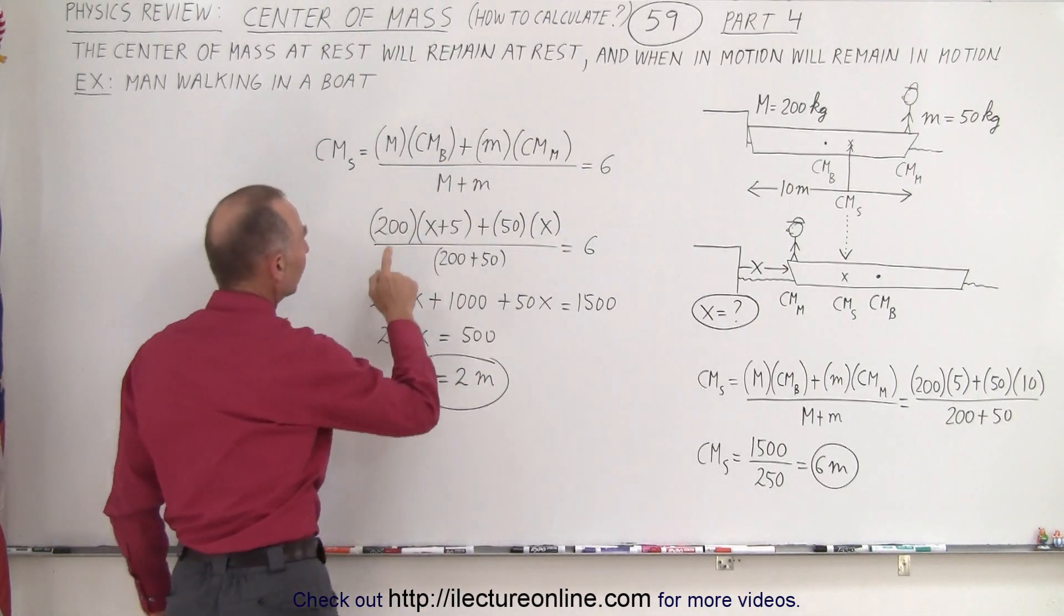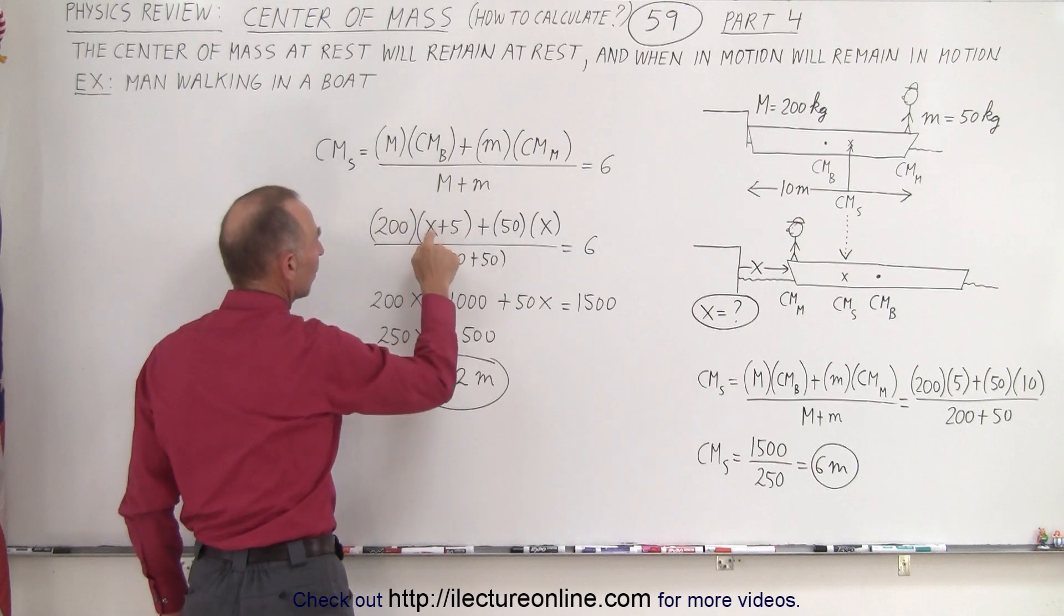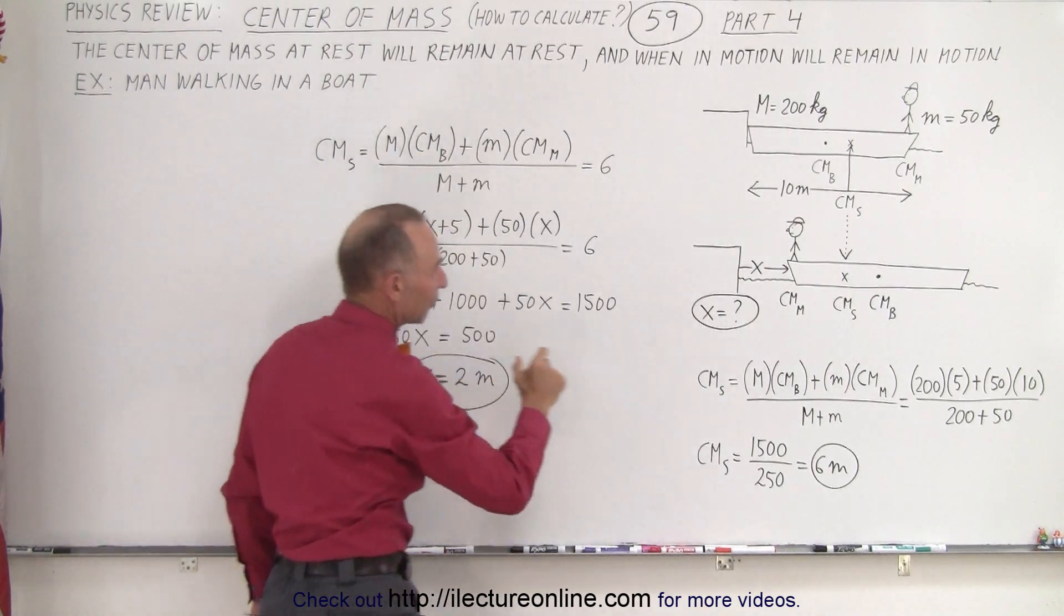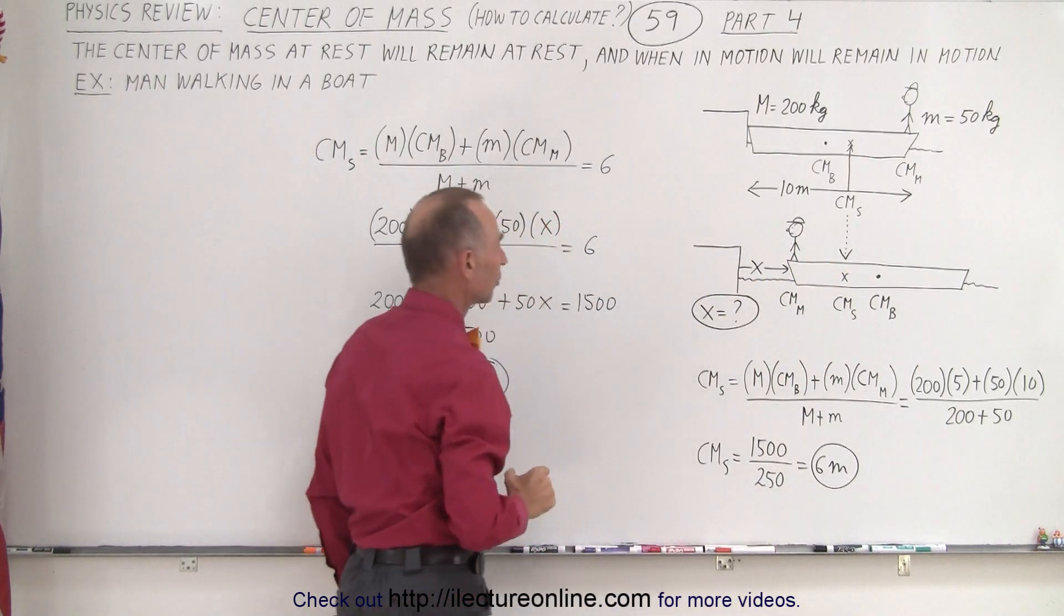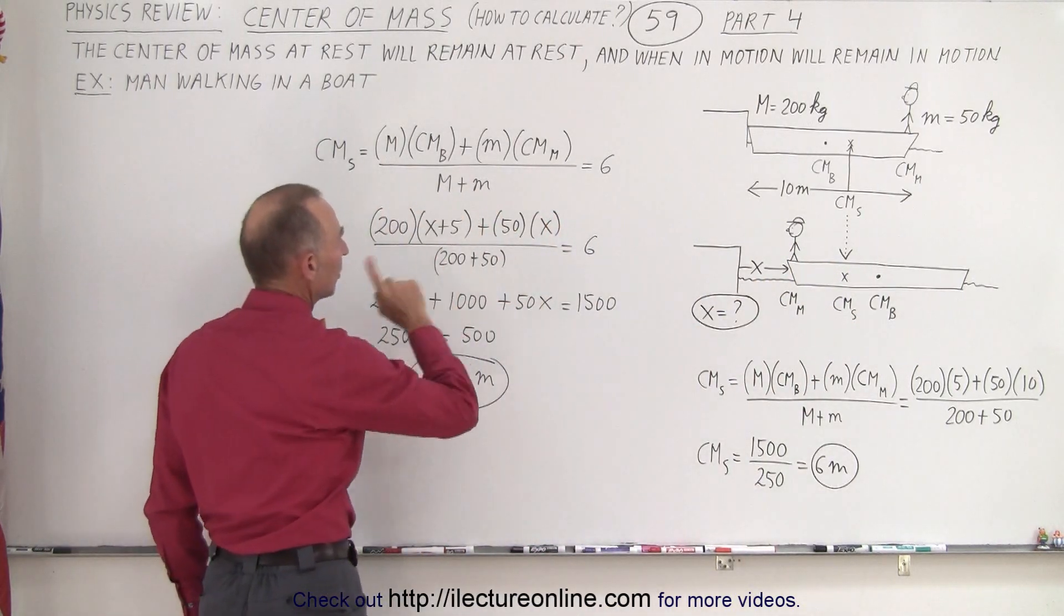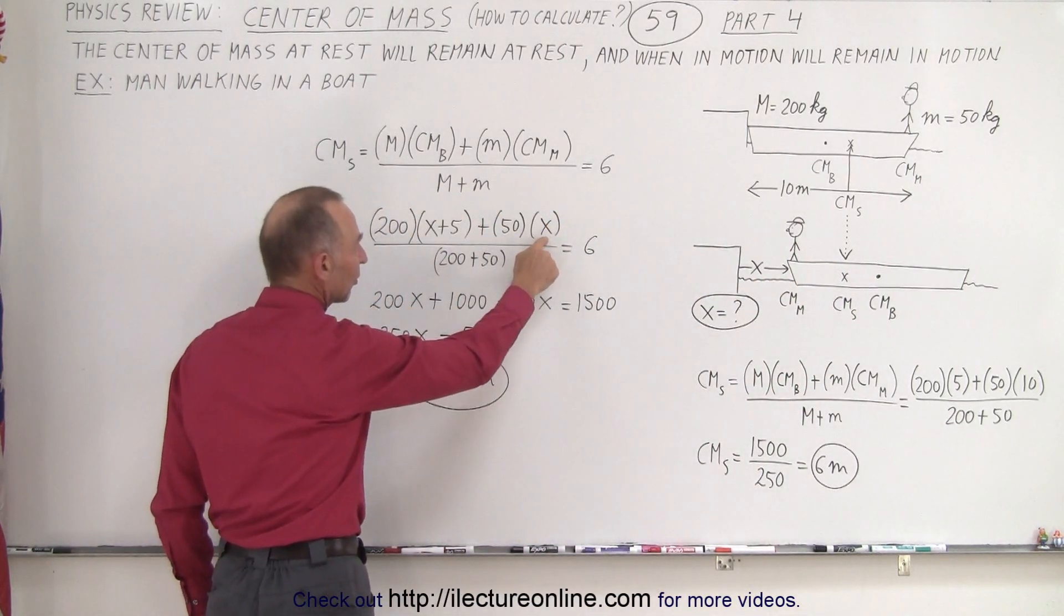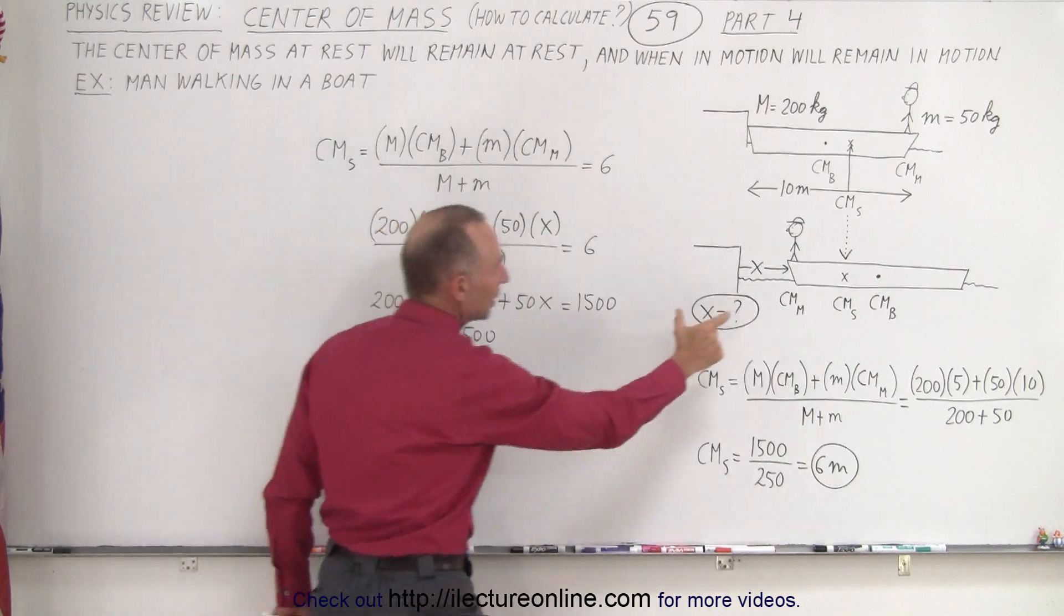But now notice that the distance to the center of mass of the boat is going to be x plus 5. In other words, this distance plus half the length of the boat. And the distance of the center of mass of the man is going to be distance x.